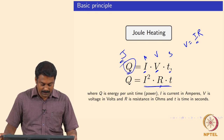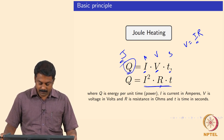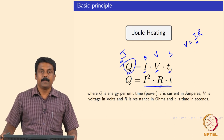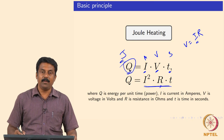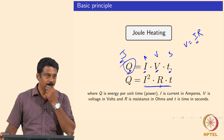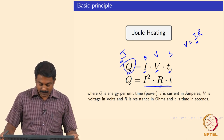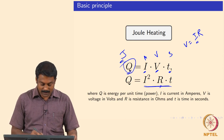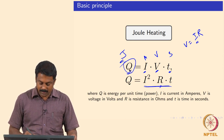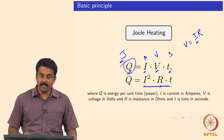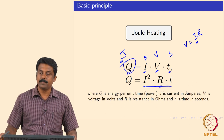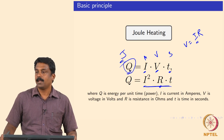Here, Q is the energy. If you move Joules per second, and bring seconds to this side it becomes Joules. Joules per second is watts. So the heat generated in Joules is nothing but current squared times resistance.